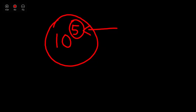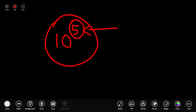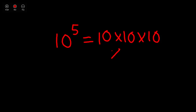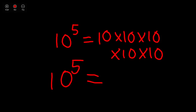This smaller number on top is an exponent. The exponent can be very useful because it can tell you exactly what power of 10 you're talking about. 10 to the power of 5 could also be written as 10 times 10 times 10 times 10 times 10 — 5 times 10 is multiplied by itself.